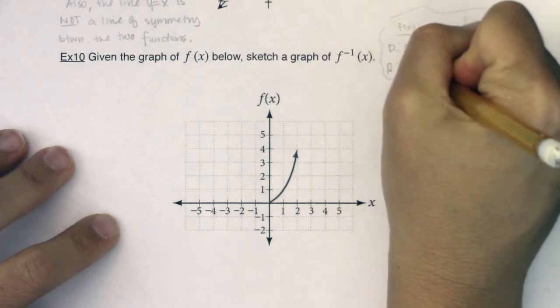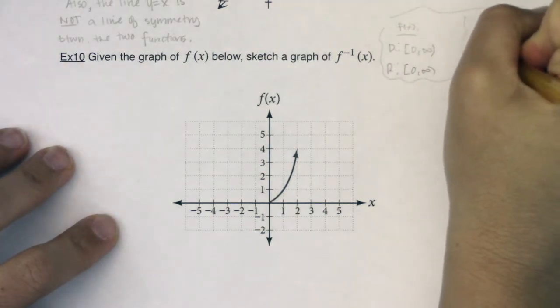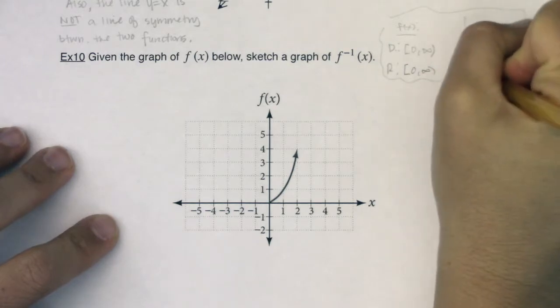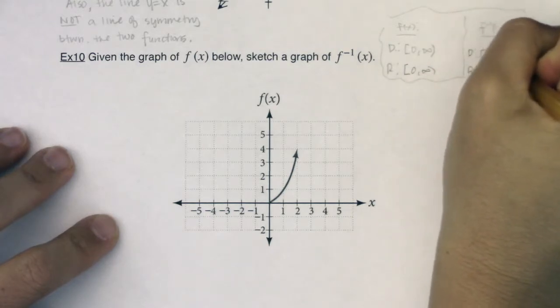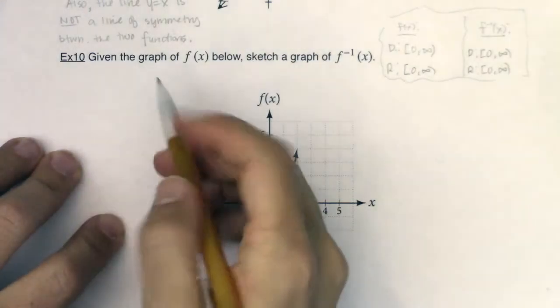That makes it nice—the domain and range for f inverse are the same. Even though they technically flip-flop, since these are both zero to infinity, they flip-flop to zero to infinity.